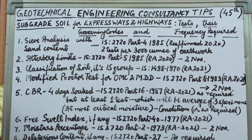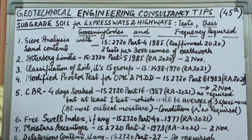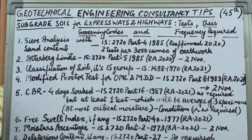Number one is the Sieve Analysis Test with sand content, to be done as per Indian Standard code IS 2720 Part 4, 1985 reaffirmed 2020. The code specifies that for every 3,000 cubic meters of earthwork, you have to do at least two tests.